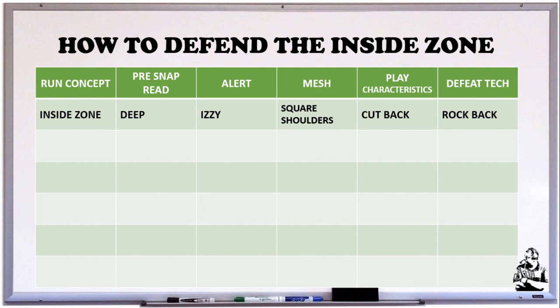How we do that is we make sure we do a pre-snap read. Our pre-snap read is 'deep' — that means the back is deeper than the quarterback. Our alert to our defense is 'Izzy,' which stands for inside zone. I talked about getting great pre-snap reads in a previous episode, so feel free to check that out.